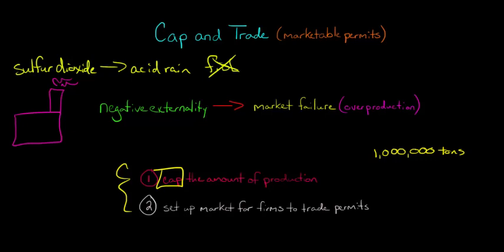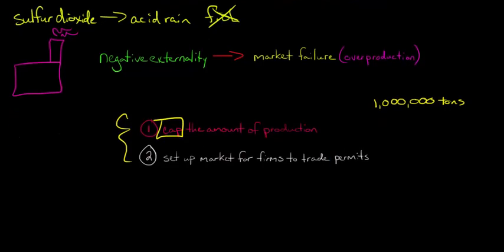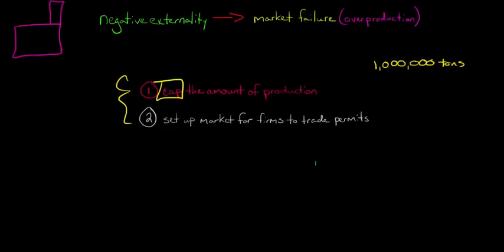But the second part is, now that we've done that, we're going to set up a market where firms can actually trade and buy and sell permits to emit sulfur dioxide. So here's how this would work. Let's say that we have an industry with three firms: firm A, firm B, and firm C.